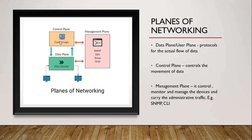Then we have the control plane. As the name indicates, it controls the movement of the data. It deals with the functions and processes that help determine the best path to transfer the data. Then we have the management plane and it controls, monitors and manages the devices and carries the administrative traffic. Its primary function is to control, monitor and manage the devices connected with the management plane, and the most important protocols used here are SNMP and CLI.